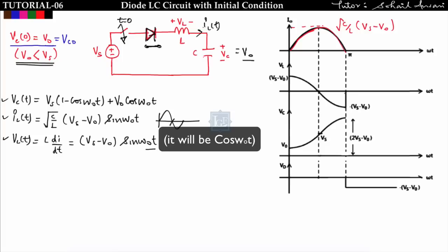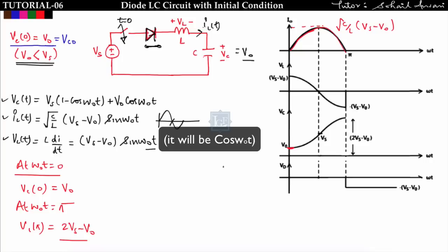After π, the inductor current is zero, so vL = L·diL/dt = 0. For vc(t): at ω₀t = 0, vc(0) = V₀ (initial voltage). At ω₀t = π, vc(π) = 2Vs - V₀. So at steady state, the voltage across the capacitor is 2Vs - V₀.